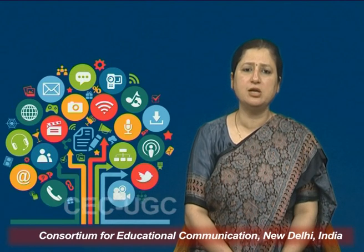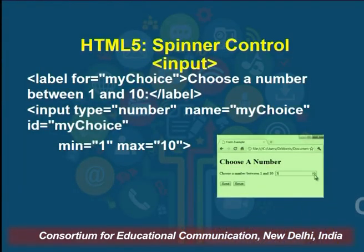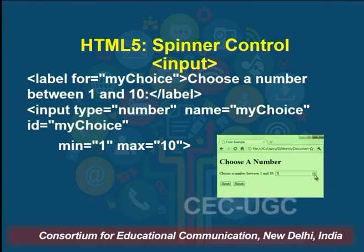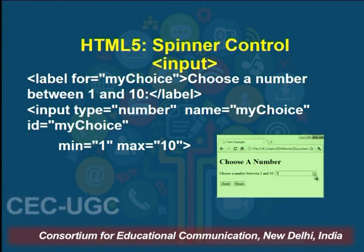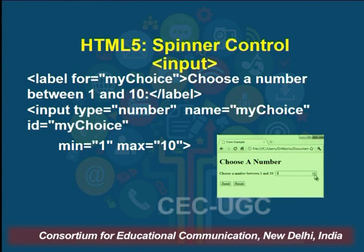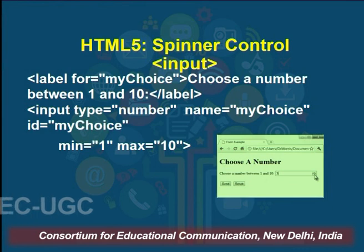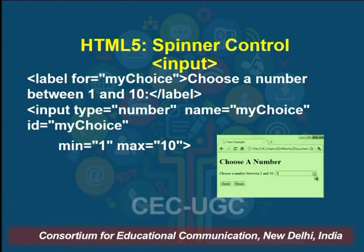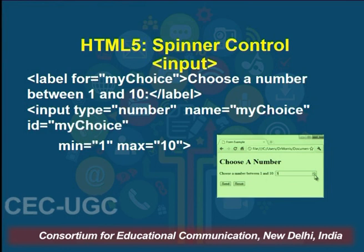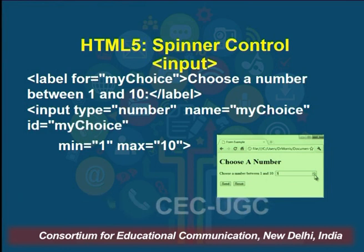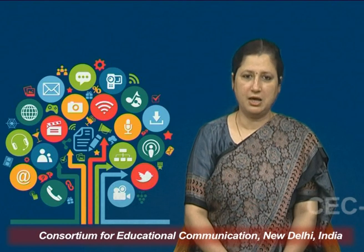The next type of control is the spinner control, which is similar to the slider control. Here we allow the user to choose a number with a min and a max value. For example, if you want the user to rate something out of 5, you give 5 for very poor and 1 for excellent. The values appear as if spinning on a vertical axis.